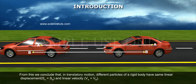in translatory motion, different particles of a rigid body have same linear displacement, SA is equal to SB, and linear velocity,